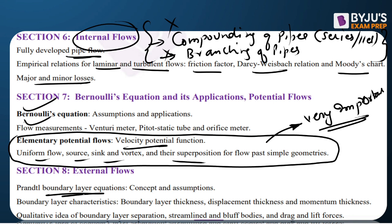For external flow, boundary layer equations, boundary layer theory concepts and assumptions, von Karman equation, boundary layer thickness, displacement thickness, momentum thickness, and boundary layer separation are all part of the engineering science syllabus. Drag and lift forces on submerged bodies and streamlined/bluff bodies are also included. External flow is more or less the same as the civil and mechanical engineering syllabus.